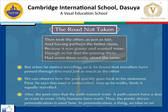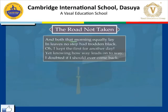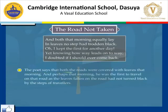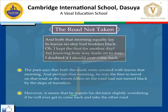"And both that morning equally lay, in leaves no step had trodden black. Oh, I kept the first for another day, yet knowing how way leads on to way, I doubted if I should ever come back." Here, the poet says both roads were covered with leaves that morning, and perhaps he was the first to travel on that road, as the fallen leaves had not turned black by the steps of travelers. However, it seems he regrets his decision, slightly wondering if he will ever get to come back and take the other road.